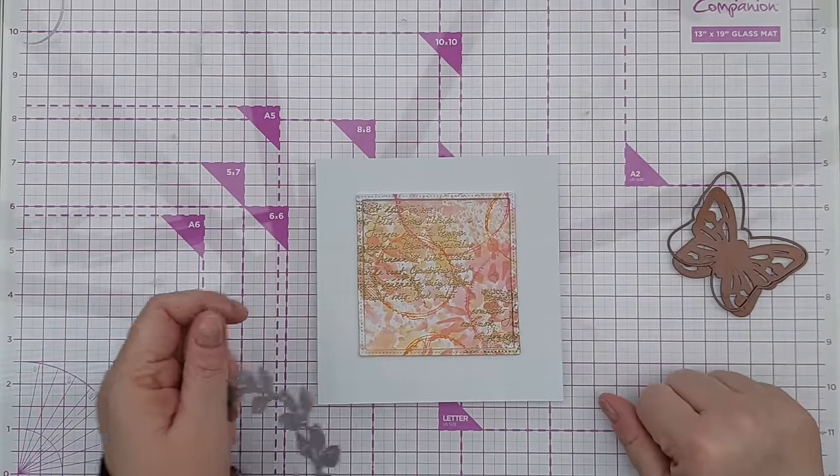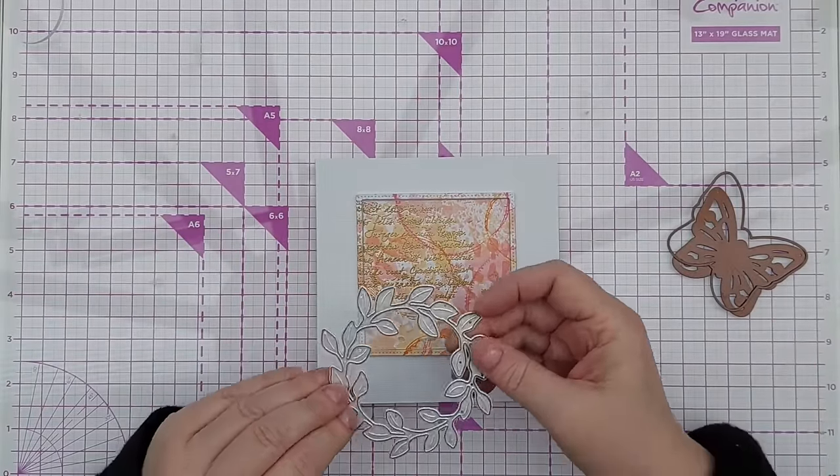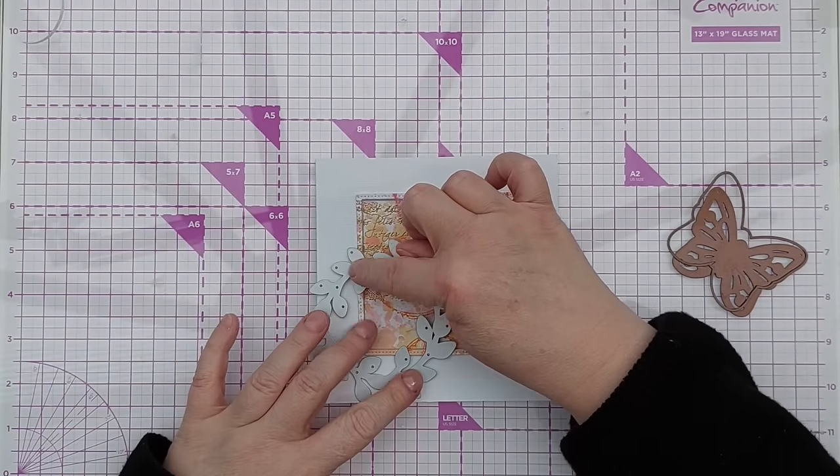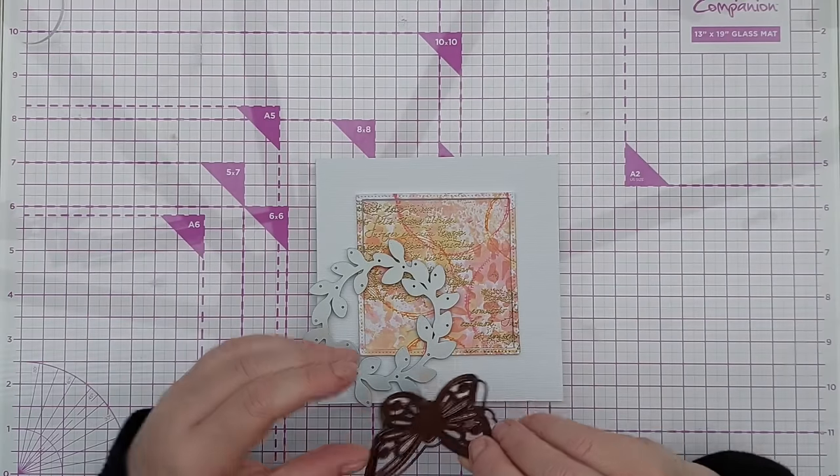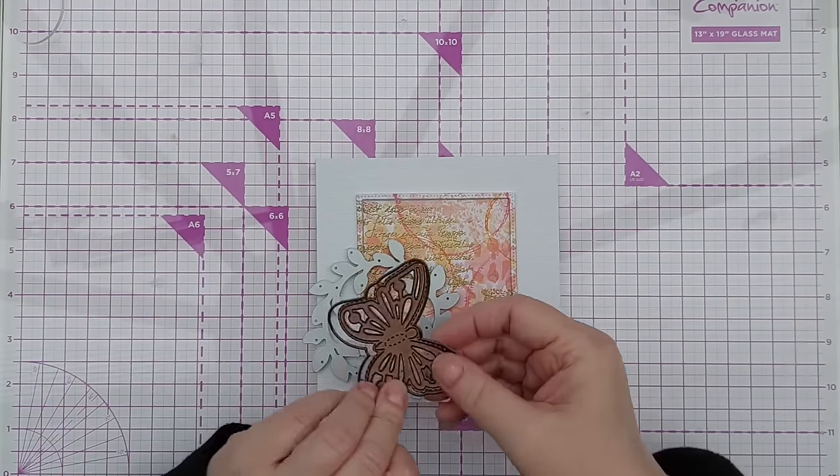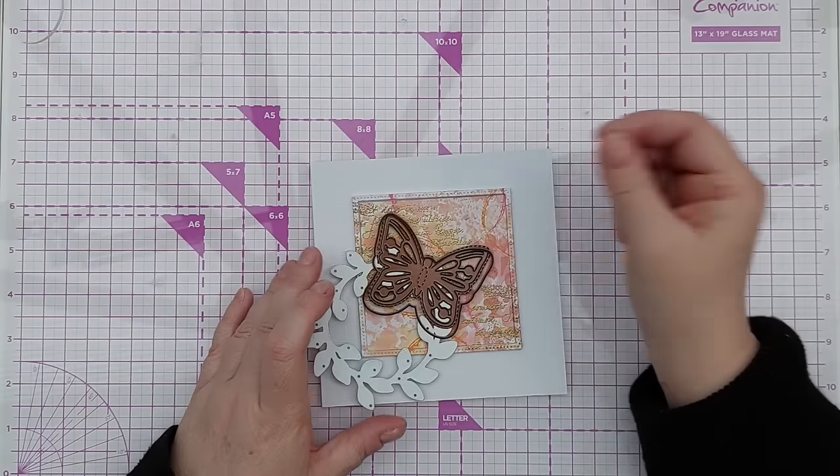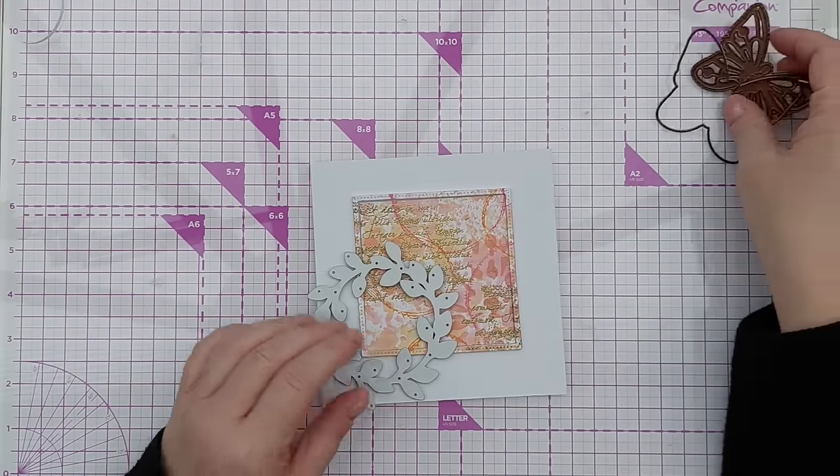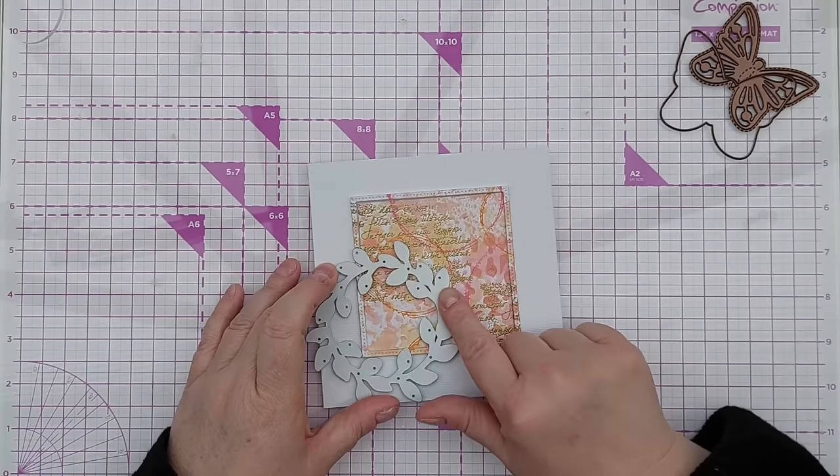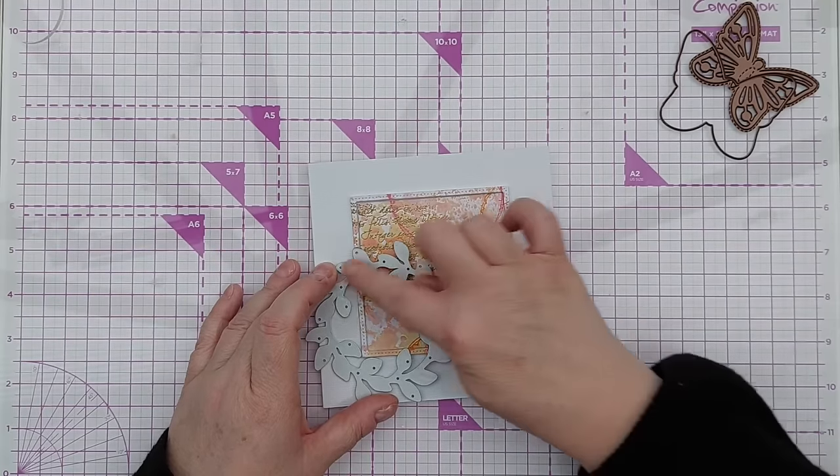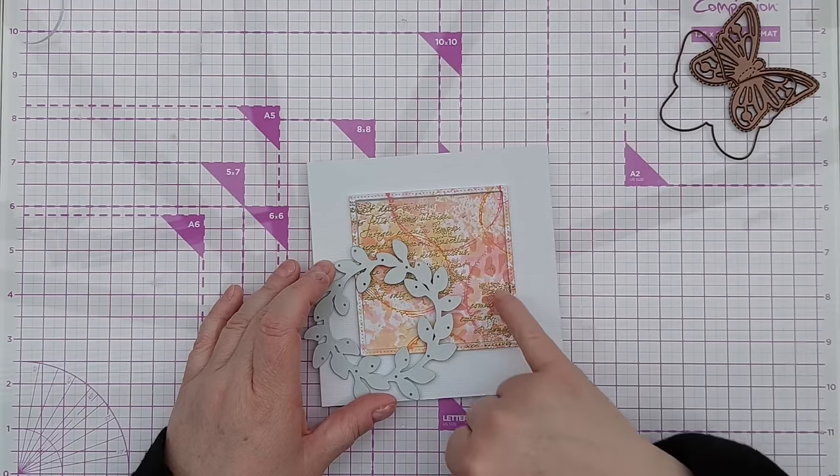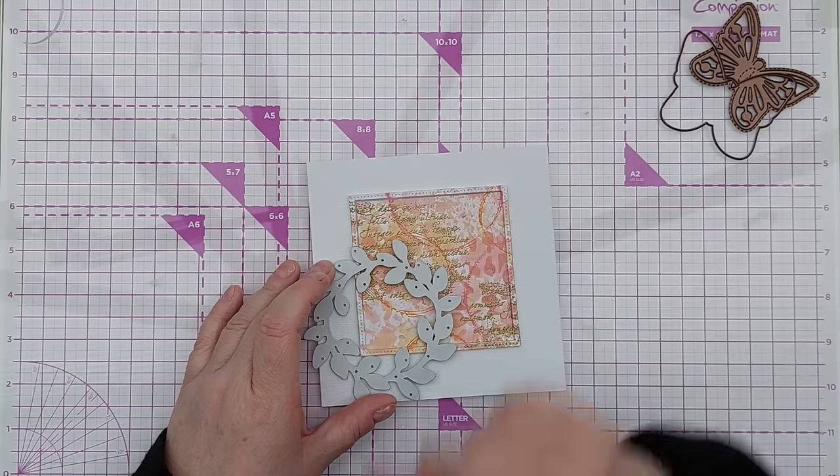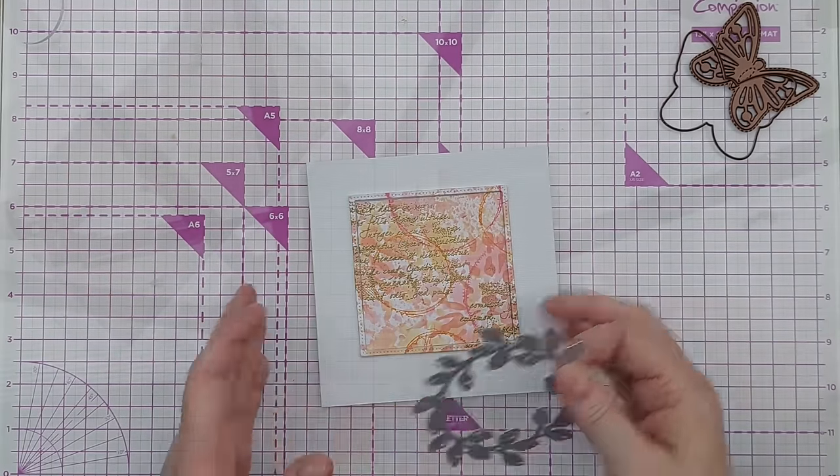So as we've got some circles on here already I'm thinking of using this circle wreath die to add something here and then I'm getting butterfly vibes as well, might use this to create a butterfly to sit on there. I'm thinking I shall cut this, die cut this out of some scraps of white card and then heat emboss it with the gold to make it a solid gold that matches that gold. Right let's give that a go.